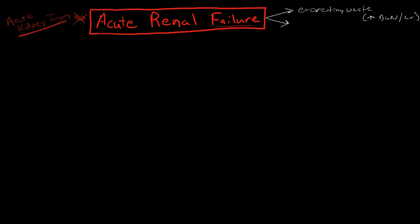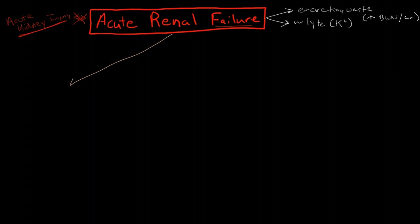Also, with acute renal failure, the kidney is no longer able to maintain a balance of electrolytes. We see an increase in plasma potassium, which can be quite dangerous. We can also see other derangements of electrolytes with decreases in plasma sodium concentration, and we can see imbalances in pH as well.